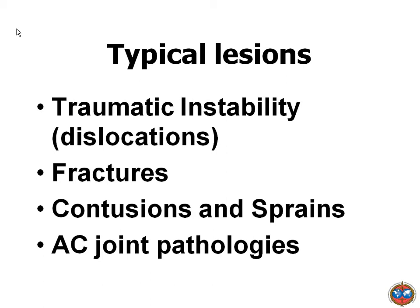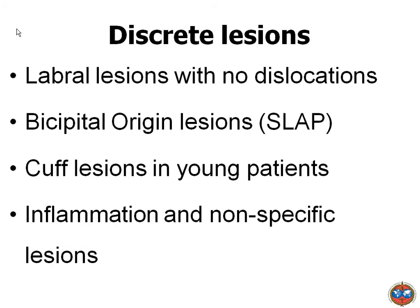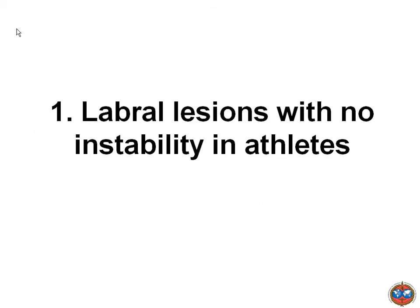This is what happens in 34% of cases when we do repair for instability in sports people, so we have to be very careful. Typical lesions are traumatic instability, fractures, contusions, sprains, and AC joint pathology. When the patient comes with shoulder discomfort or instability, when you go in with a scope you can distinguish labral lesion with no dislocations, bicipital origin lesions, SLAP lesions — superior labrum anterior and posterior — in young patients, and inflammation and non-specific lesions.